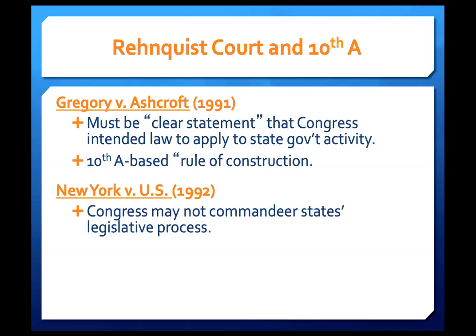O'Connor compares this to the First Amendment: Congress can regulate the interstate market in books and magazines up until the point where it would violate the First Amendment, which acts as a limitation on that regulation. She also pushes back on Justice Blackmun's view from National League of Cities, where he suggested a balancing of interests — respecting state sovereignty until the federal interest was strong enough. Justice O'Connor says no: there is simply no balancing of interests when it comes to the 10th Amendment.